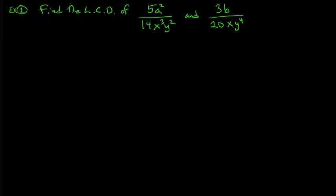Next example: find the LCD for 5a squared over 14x cubed y squared and 3b over 20xy to the fourth. Step one, here are the two denominators: 14x cubed y squared and 20xy to the fourth.